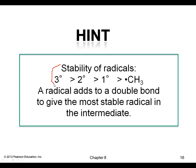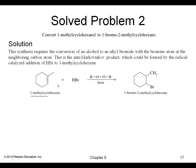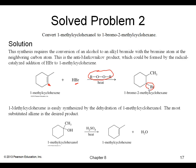Here's a review of radical stability. In another example, if we see a peroxide in the reaction, that tells us the bromine will add on to the less substituted carbon of the double bond.